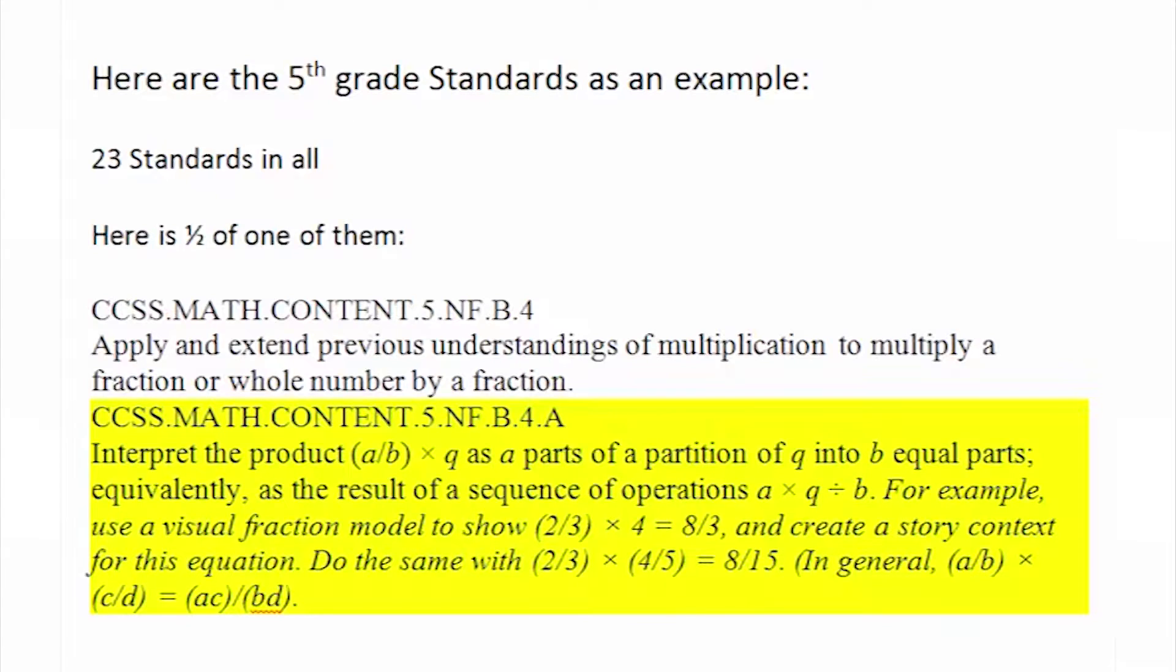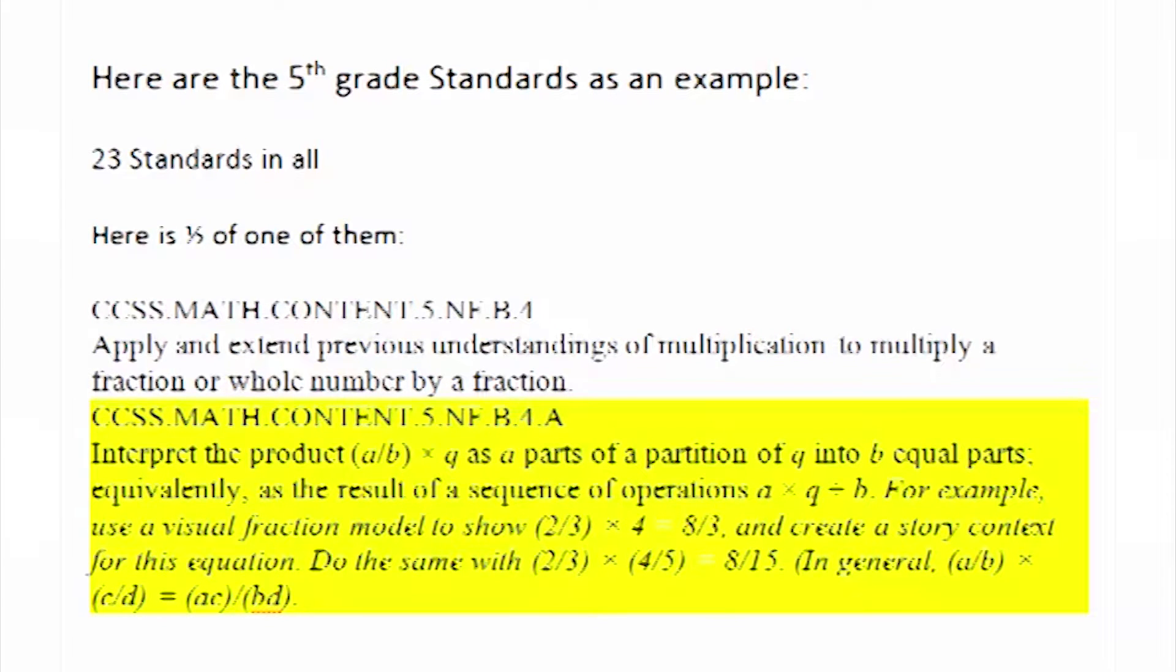We're going to look at one typical standard. Actually, this is one half of one standard, so one forty-sixth of the fifth grade Common Core Standards. I'm going to read it for you. Interpret the product A over B times Q as eight parts of a partition of Q into B equal parts, equivalently, as the result of a sequence of operations A times Q divided by B. For example, use a visual fraction model to show two-thirds times four equals eight-thirds, and create a story context for this equation.